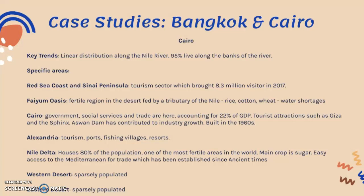Cairo is considered the core central city, with government, social services, and trade accounting for 22% of GDP. It also has a large tourism industry due to the historical attractions of ancient Egypt, Giza, and the Sphinx. The area has been greatly developed since the establishment of the Aswan Dam in the 1960s, which contributed to industrial growth by providing energy and water supply for agriculture.